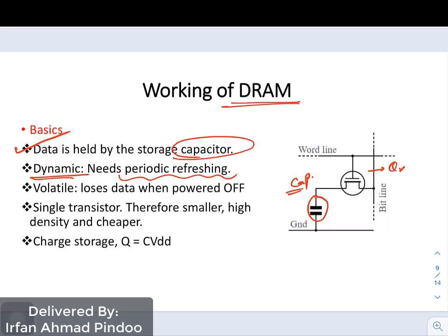I have discussed this point in the video where I discussed the differences between SRAM and DRAM. We need periodic refreshing because the capacitor has a property of charging and discharging. Once your capacitor is discharging, the stored value can get modified, so periodic refreshing is required.